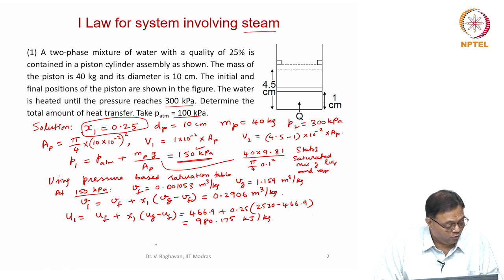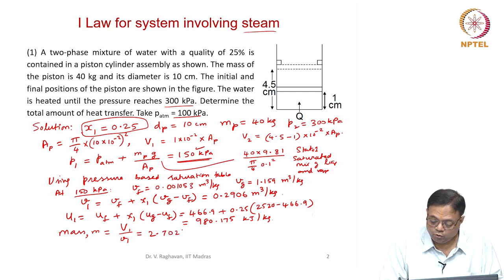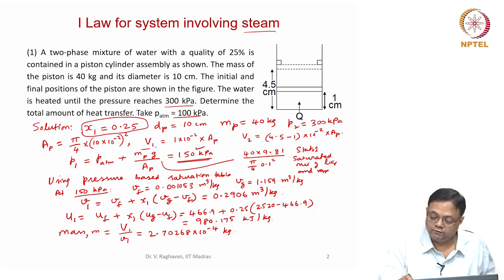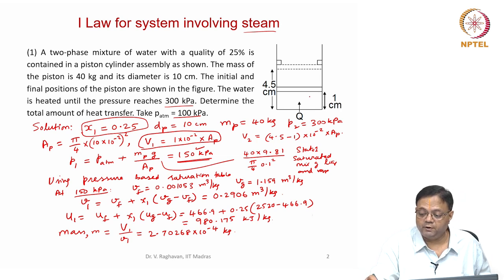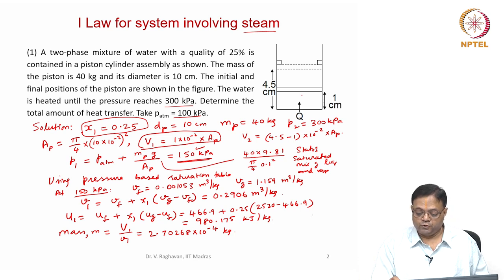What is the mass in the system? Mass M = total volume divided by specific volume = 2.70268 × 10⁻⁴ kg. V1 is found from the area of cross-section times the height of 1 centimeter at state 1. From the total volume divided by specific volume, we get the mass.